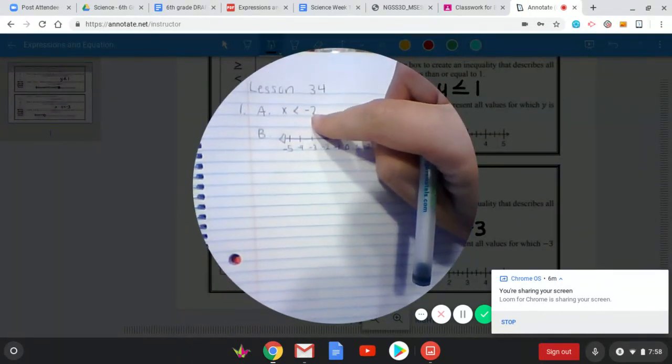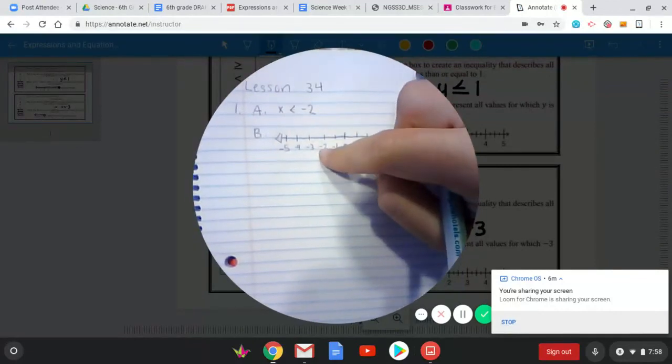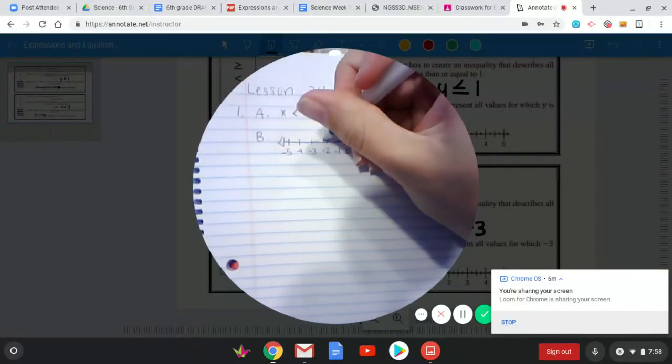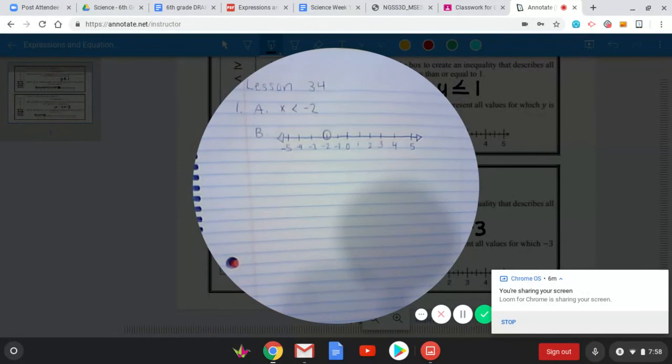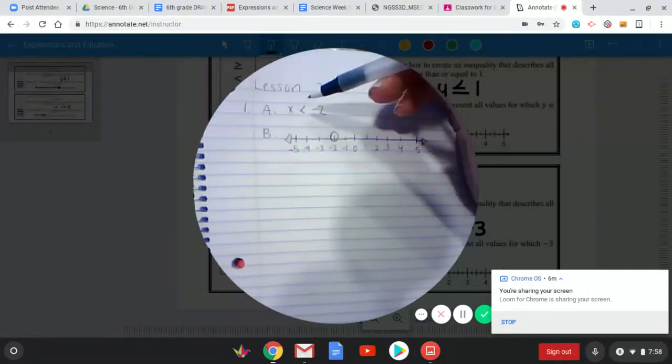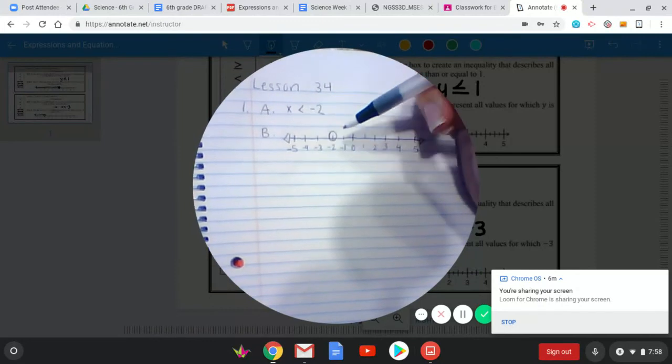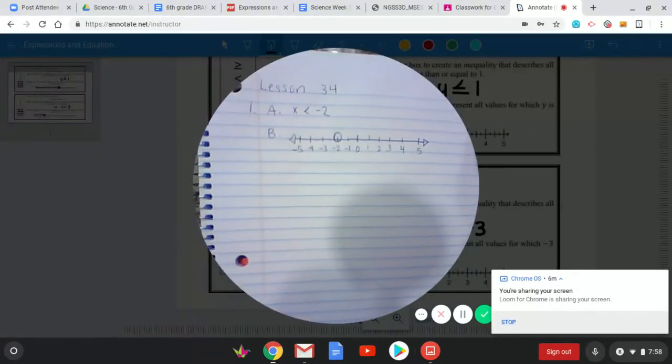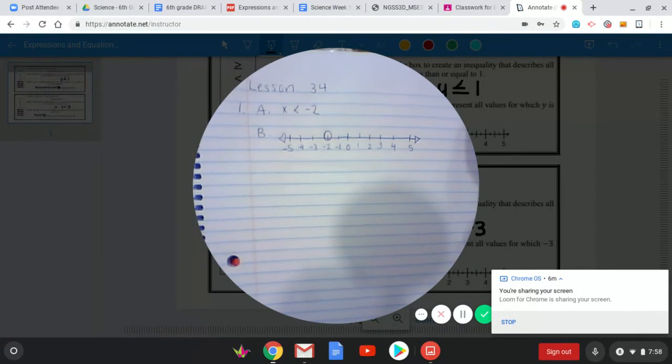So we've got our number line here and now we just have to plot this point. So x is less than negative two. So I'm going to find negative two on my number line. It's right here. Draw my circle and since I don't have less than or equal to, I just have this, no line underneath means I don't fill in my circle because it does not include negative two as part of the inequality.